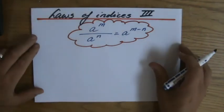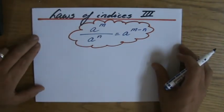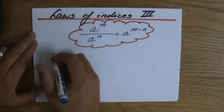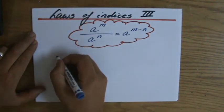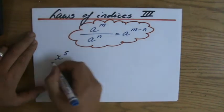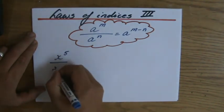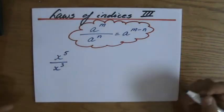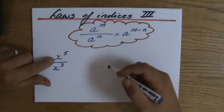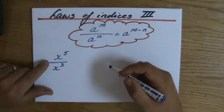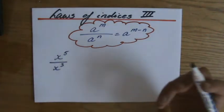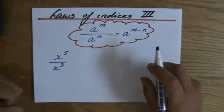Let's look at an example. Let's do x to the power 5 divided by x to the power 3. The second law of the indices says: if the bases are the same and you're dividing, you should subtract those indices — so 5 minus 3. The answer is x to the power 2.